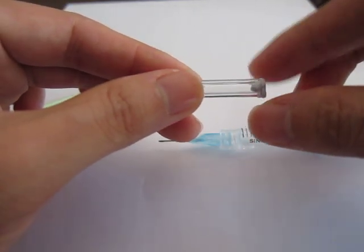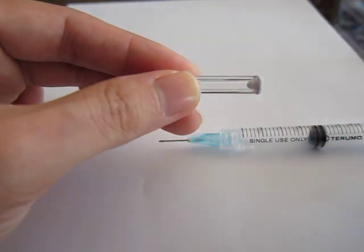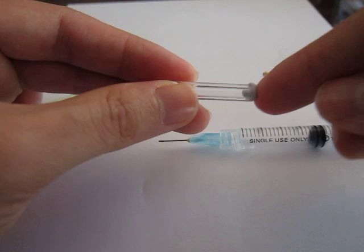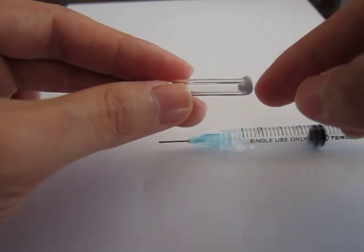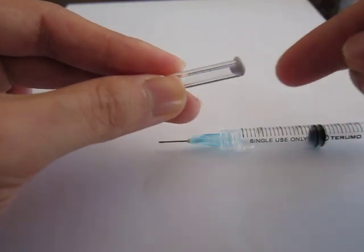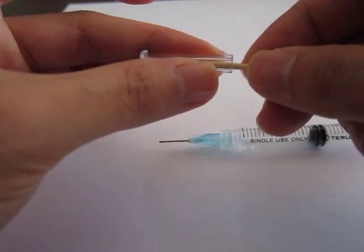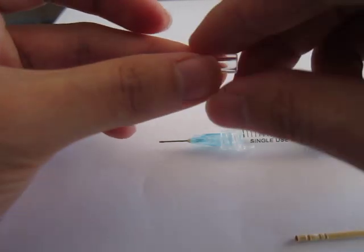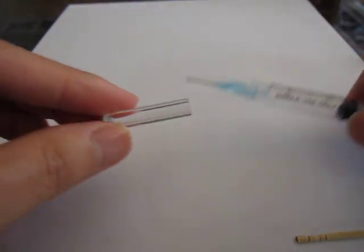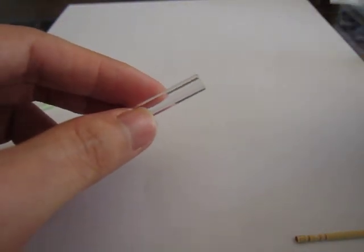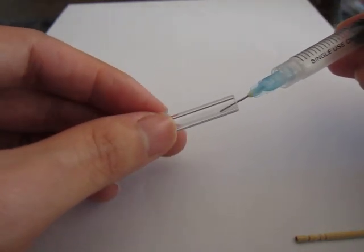What I might actually do is I've got here a toothpick, it's got a flat end to it, and I might just use this toothpick just to neaten up the end of this here. And the next step here is you just flow the Norland 61 into the tube.